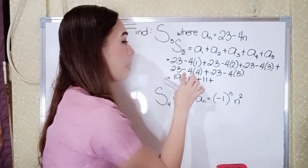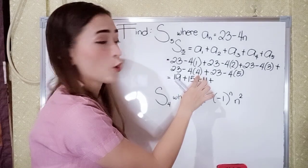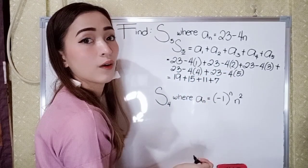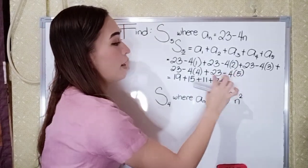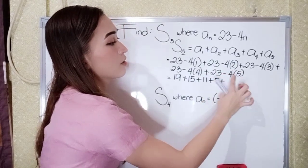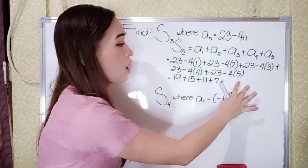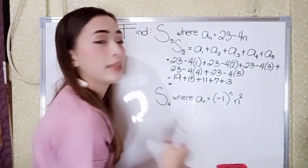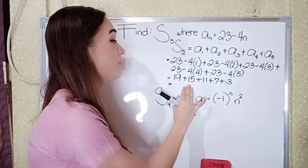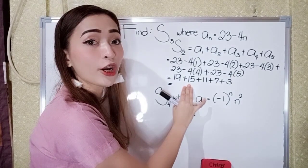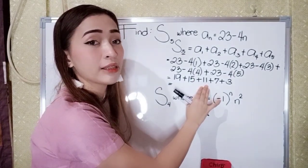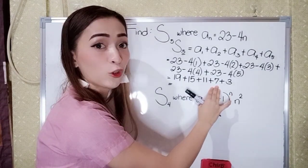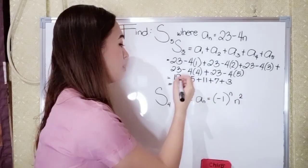23 minus 4 times 4 is 16, so 23 minus 16 is 7. Last one, plus: 23 minus 4 times 5, 4 times 5 is 20, so 23 minus 20 is 3. Now let's add: 19 plus 15 is 34, 34 plus 11 is 45, 45 plus 7 is 52, 52 plus 3 is 55.